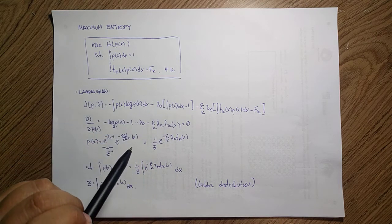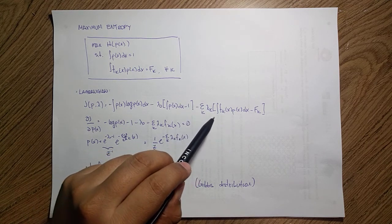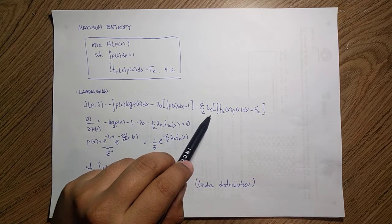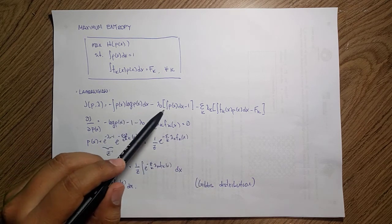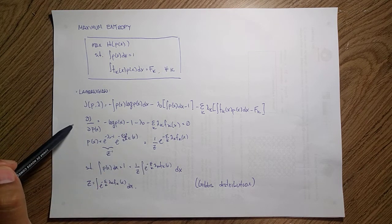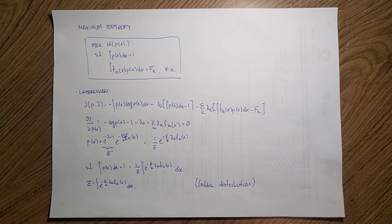I got this lambda zero. Similarly, the derivative of p(x) times lambda_k f_k is only lambda_k f_k because the p(x) cancels out. We want to find the optimum value of this, so I set it equal to zero, solve for p(x), and we get this exponential form.